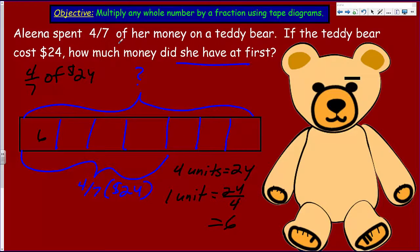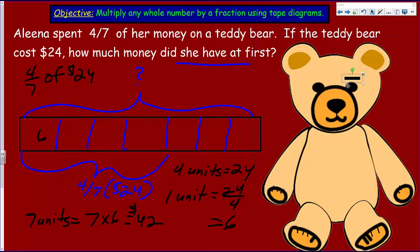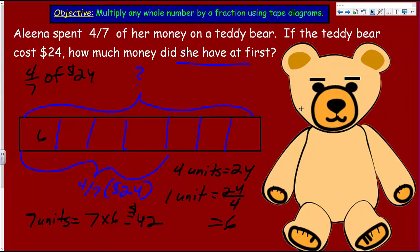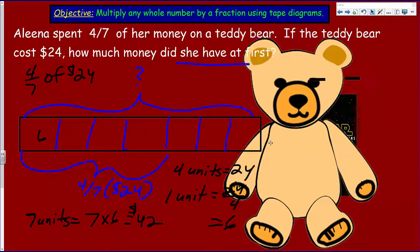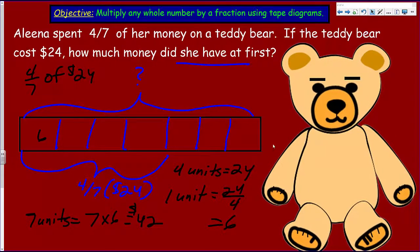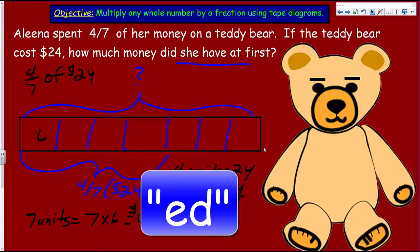Now we have six per unit. Seven units equals seven times six, which gives us 42. So Alina had 42 dollars at the beginning. As always, live long and prosper, my friends!